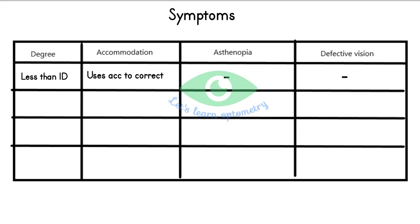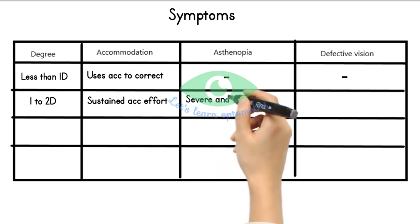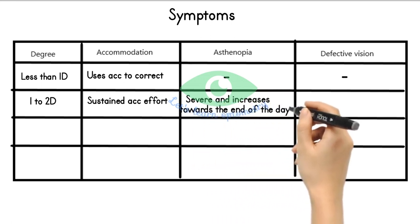With 1 to 2 diopters, the patient requires sustained accommodative effort, so they may develop asthenopia symptoms like headache, eye strain, watering, and photophobia. Symptoms worsen as the day progresses or with prolonged near work.